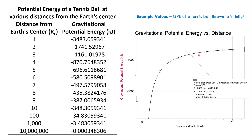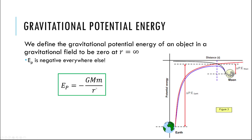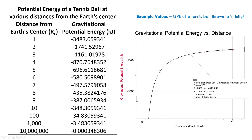Those are some conceptual things to help you picture why. At 10 million Earth radii away, we're getting really close to zero potential energy. It's this 1 over R relationship — potential energy approaches zero as we get further and further away.